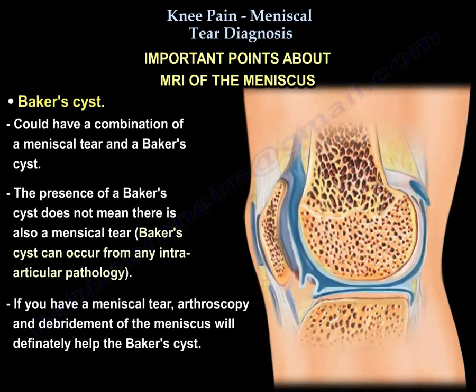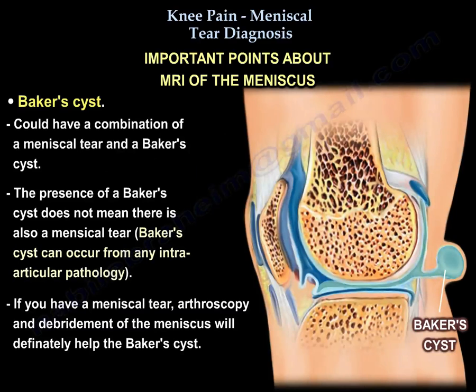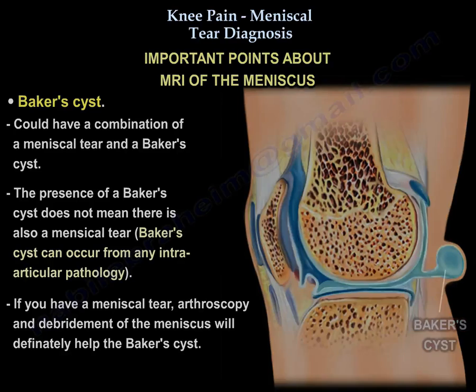Regarding Baker's cyst, you could have a combination of meniscal tear and Baker's cyst. However, Baker's cyst does not mean you have a meniscal tear — it can happen from any intra-articular pathology. But if you do have a meniscal tear, arthroscopy and debridement of the meniscus will definitely help the cyst.